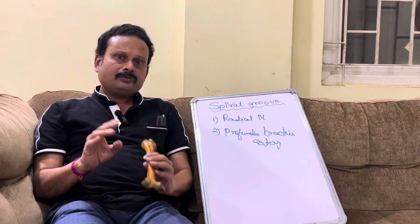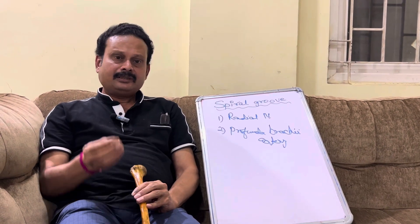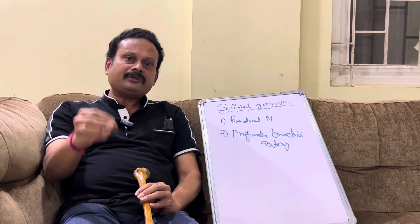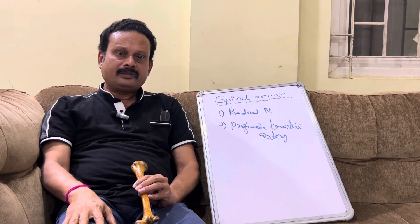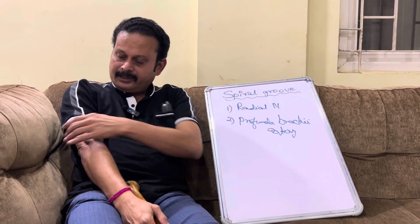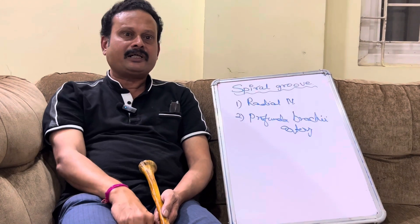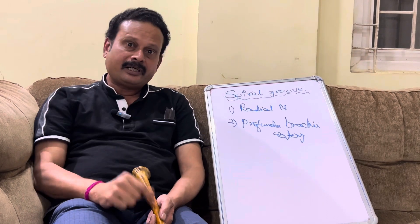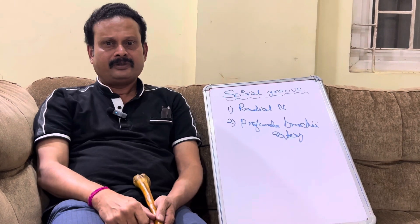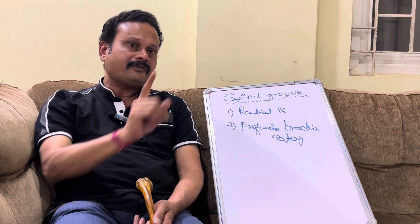The radial nerve in the spiral groove is important because any intramuscular injection done wrongly in the triceps region may damage this nerve, or it may damage the branches arising from the radial nerve within this groove. There are five branches arising from the radial nerve in the spiral groove.